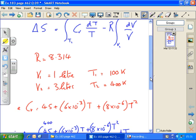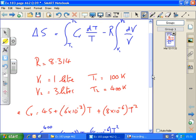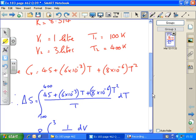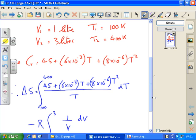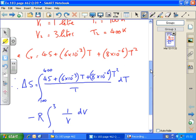You're given some values. R, which is the gas constant, is 8.314. The volume changes from 1 litre to 3 litres. The temperature from 100 kelvins to 400 kelvins.